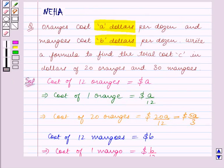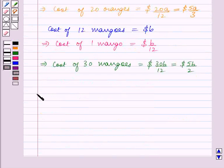Now we have to find a formula to find total cost C in dollars of 20 oranges and 30 mangoes. So according to the given statement.